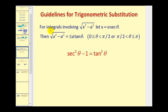The last case is when we have an integral involving the square root of x squared minus a squared. Here we let x equal a secant theta, and therefore the square root of x squared minus a squared equals plus or minus a tangent theta. The plus or minus depends on the angle theta: since tangent theta is positive between zero and pi over two, we use positive a; between pi over two and pi, tangent theta is negative, so we use negative a. This is based on secant squared theta minus one equals tangent squared theta.